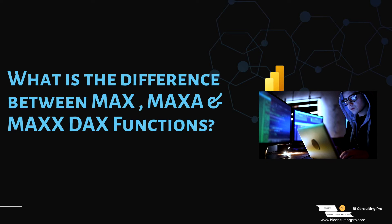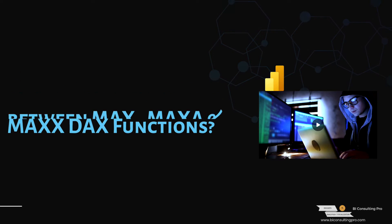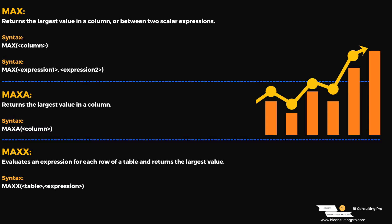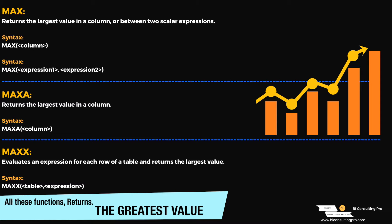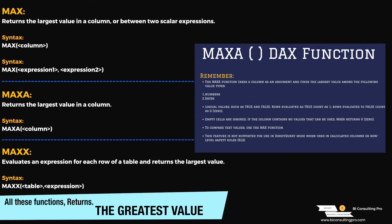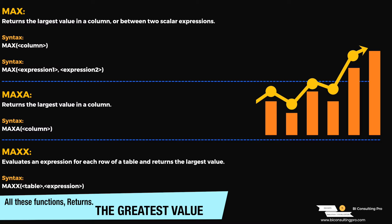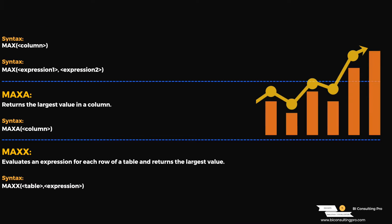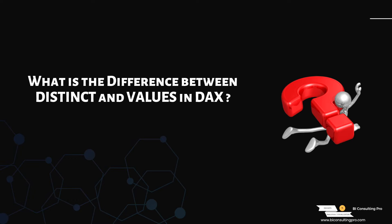The second question was: what is the difference between MAX, MAXA, and MAXX DAX functions? MAX returns the largest value in a column or between two scalar expressions — the syntax is simply MAX over a column, or two expressions under the parenthesis. MAXA returns the largest value in a column, including boolean data types. MAXX is specific to an expression, so you provide a table and the expression you want to evaluate over it.